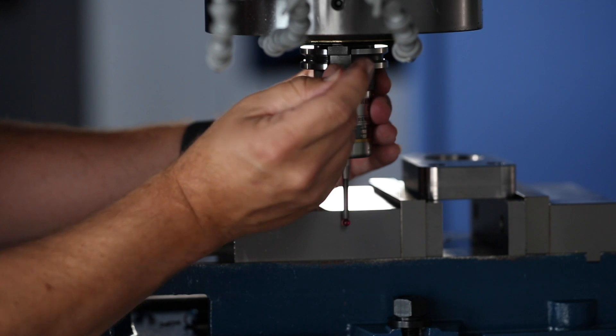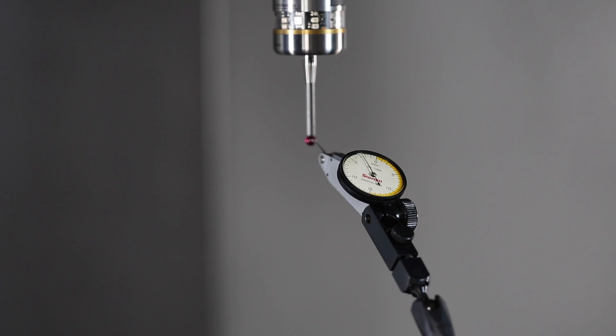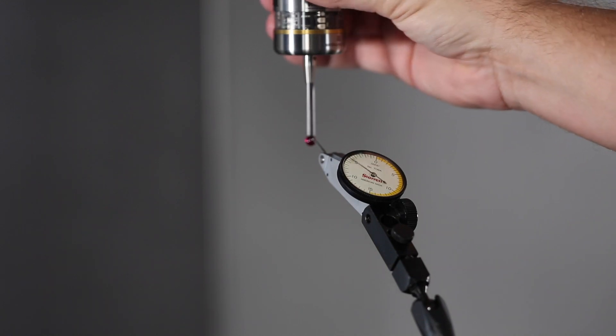Once we've visually put it on center, we will mount our magnetic base to the table of our machine and place the indicator on the stylus ball. Now we can spin the probe by hand to see exactly how much run out we have in the probe.